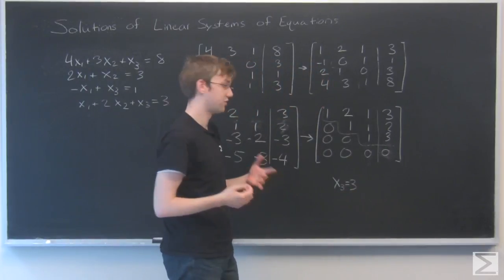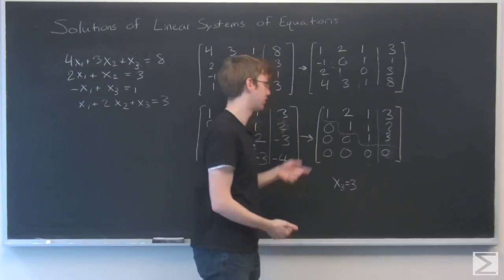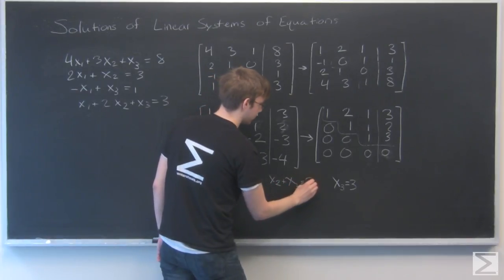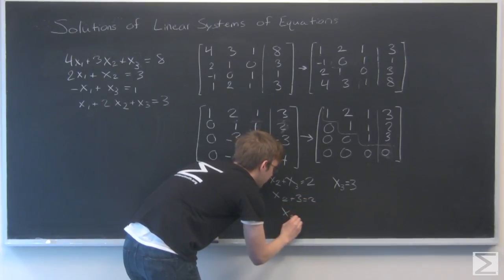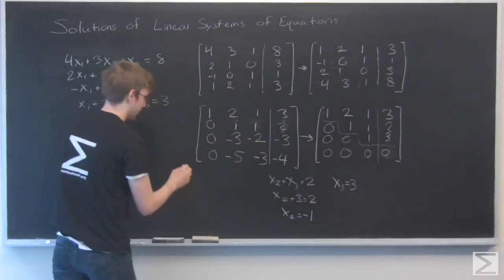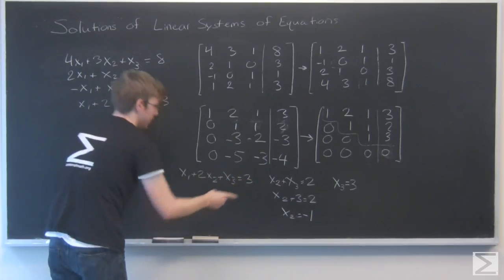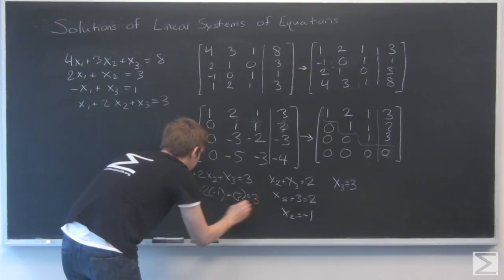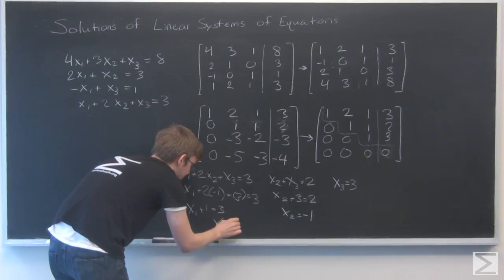So now I have a value for one of my variables. And I can use that to back substitute and figure out the other ones. Let's think about what this row represents in terms of a linear equation. That's 0x1 plus x2 plus x3 equals 2. So I can just back substitute that 3 in. That's x2 plus 3 equals 2. Or x2 equals minus 1. Now I'm going to go back to this first row. And I have x1 plus 2x2 plus x3 equals 3. I'll substitute my values in. x1 plus 2 times minus 1 plus 3 equals 3. That's the same as x1 plus 1 equals 3. Or x1 equals 2.